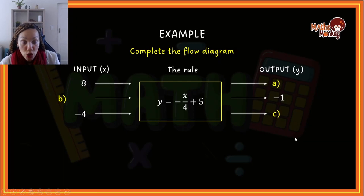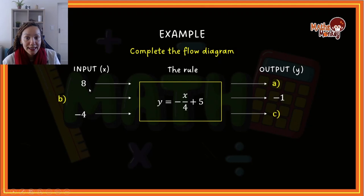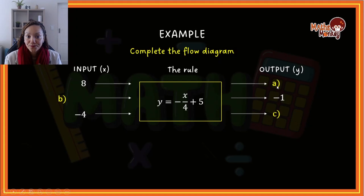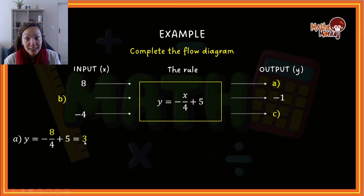Here's another example — it says complete the flow diagram. They give us the rule, the inputs, and the outputs, and we must complete values a, b, and c. First make sure you understand what is being asked. Looking at a, it is an output, so my brain says I need to substitute. I take 8 and substitute it in by x, simplify, and find the answer is 3. So a in our flow diagram equals 3.